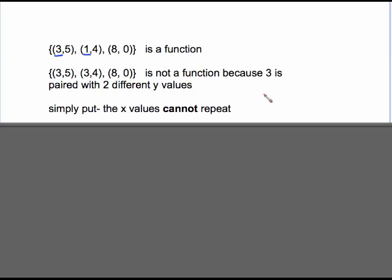Simply put, the x values cannot repeat unless you have something goofy like this. If I have the point 1, 4 and then I have the point 1, 4, that still makes a function but it's just redundant. There's no reason to write that point twice. So when I say the x's can't repeat, I mean they can't repeat with different y values as partners.